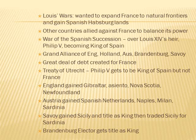The Grand Alliance of England, Holland, Austria, Brandenburg, and Savoy in Italy formed against France. A great deal of debt would be created for France. The Treaty of Utrecht — a very important treaty you need to know — resulted in Philip V getting to be King of Spain, but not King of France.